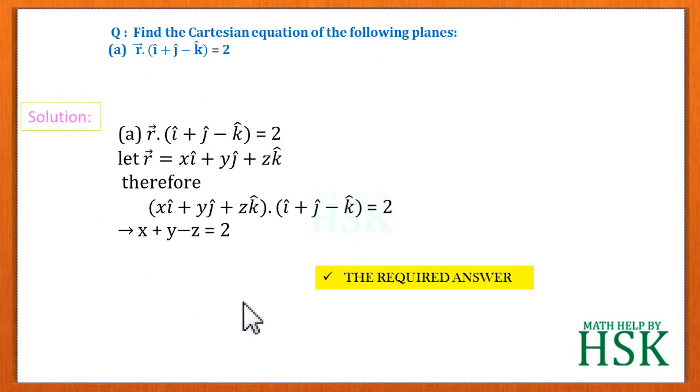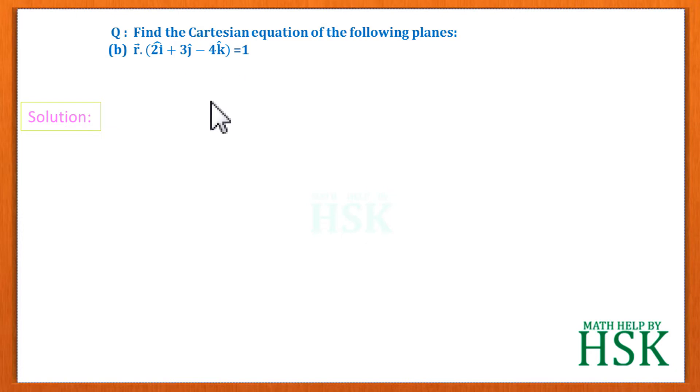In the second part we have to do the similar thing. We take the equation of the plane, place r = xi + yj + zk. Therefore, on placing the value of this vector r, I'm going to get (xi + yj + zk) dot (2i + 3j - 4k) = 1.